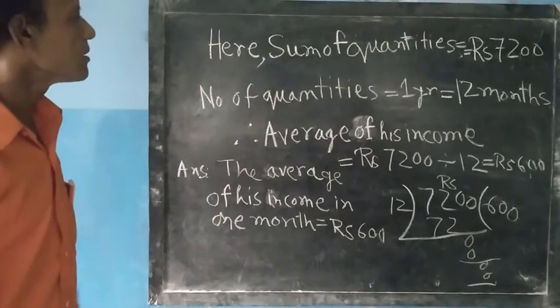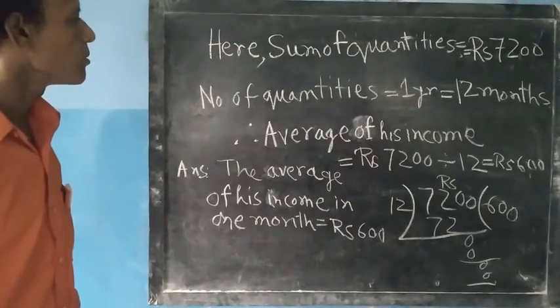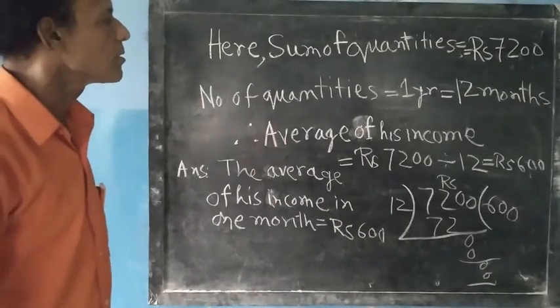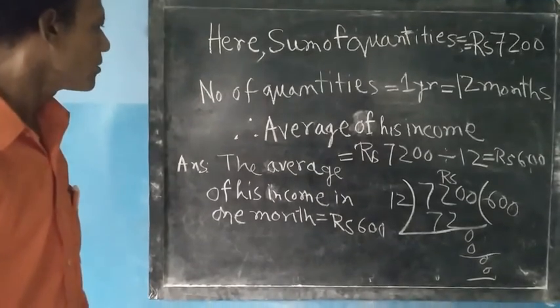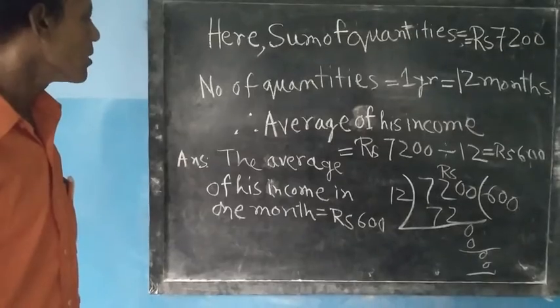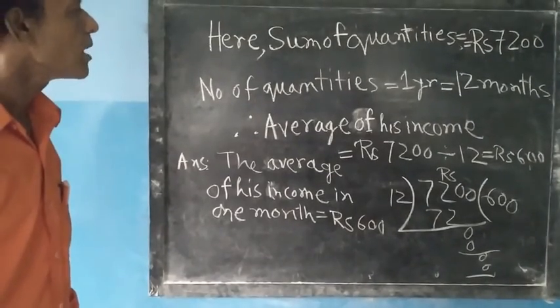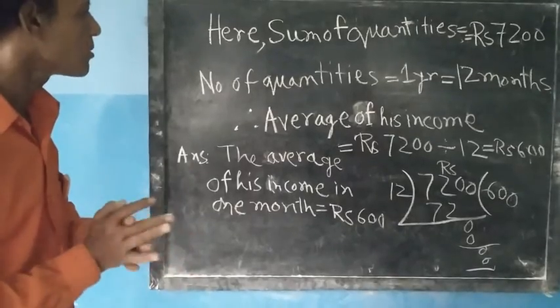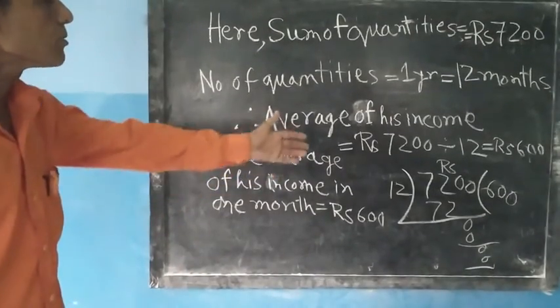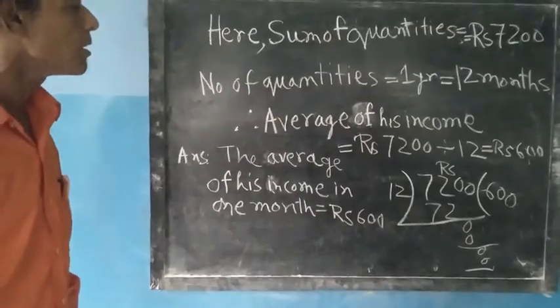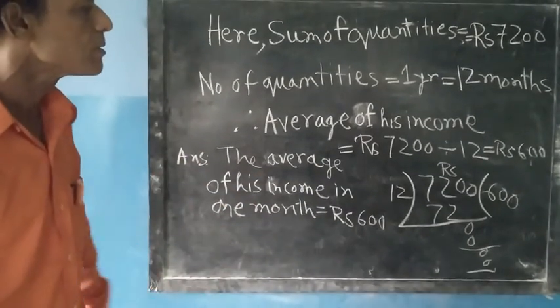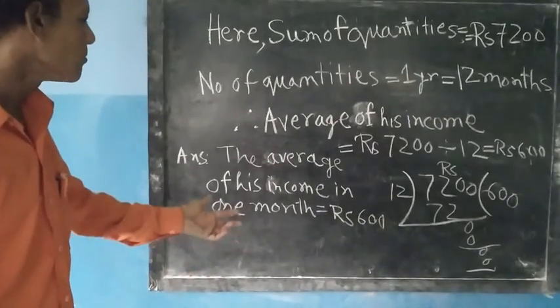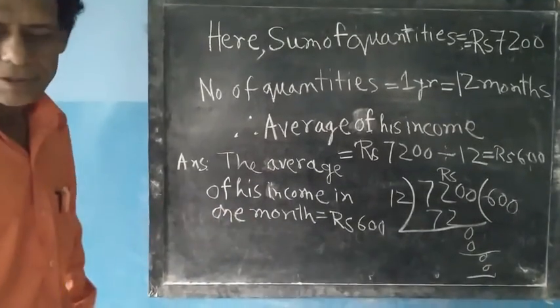The sum is Rs 7,200 per year. The number of months in one year is 12. So the average monthly income is 7,200 divided by 12, which equals Rs 600.